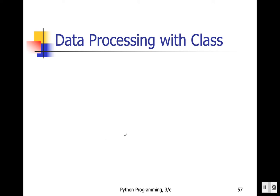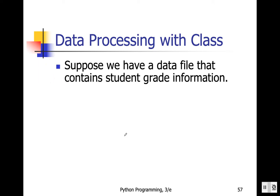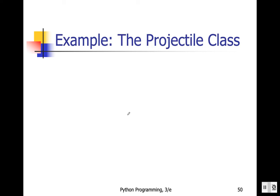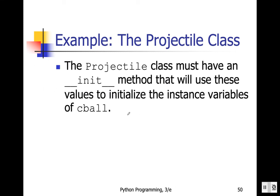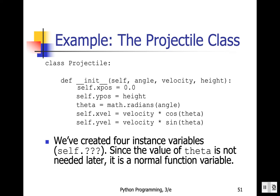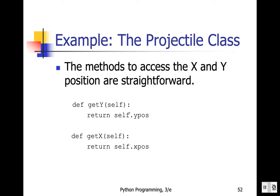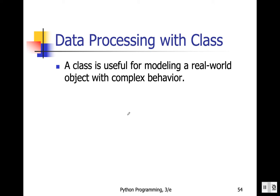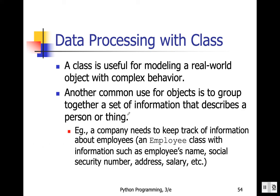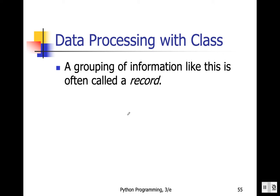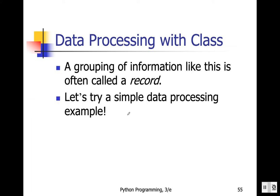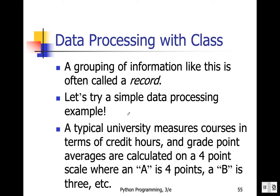Hello everyone. Last class we talked about the introduction of defining class and object, so here we are going to see a couple of examples of how we can do data processing with a class. Last class we saw one example of a multi-sided dice — we can create a class of dice where the number of sides can be any number, not just six. We also talked about another example where we can create a class definition for a student, where a group of information like this is known as a record. So we are going to do a simple data processing example with those records.